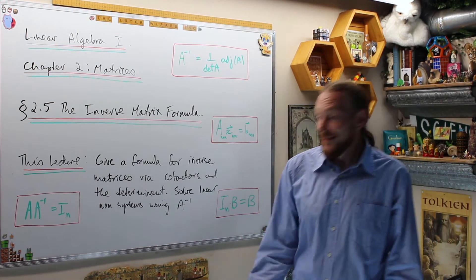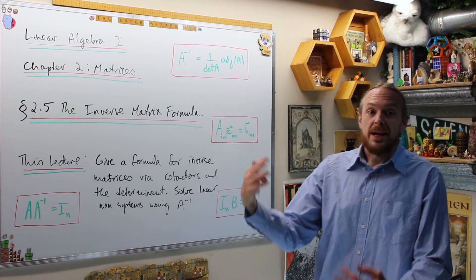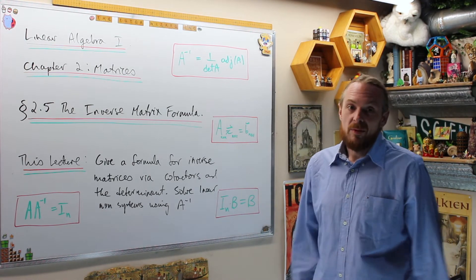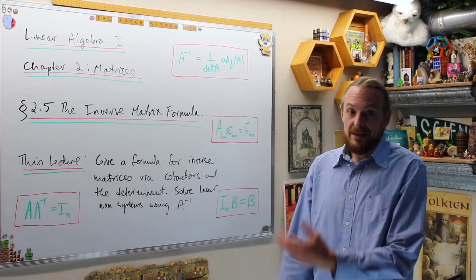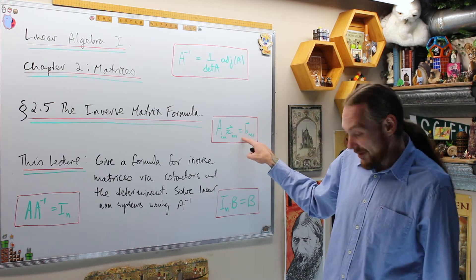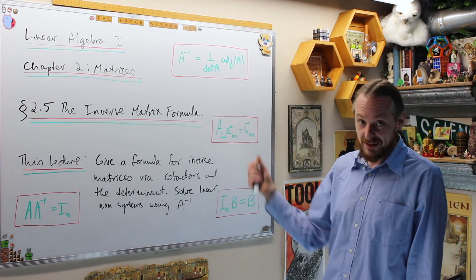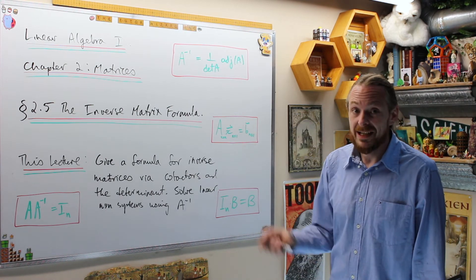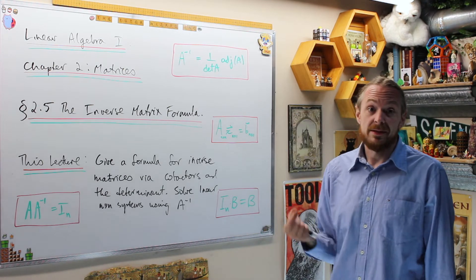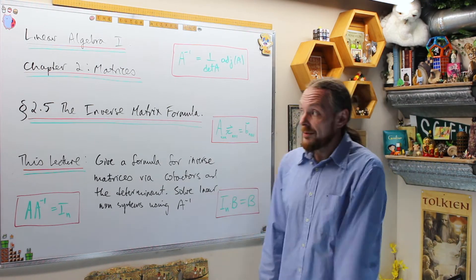And then we're going to use that — now that we have more than one systematic method of finding inverses — to solve an n by n linear system, which is going to have a unique solution if and only if the determinant is non-zero so we can invert. Let's get to it.